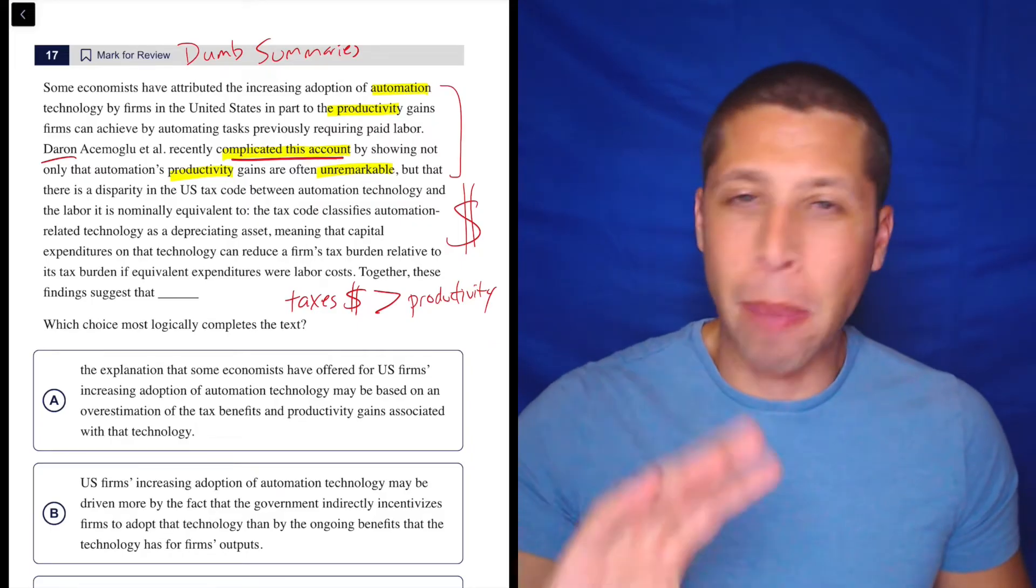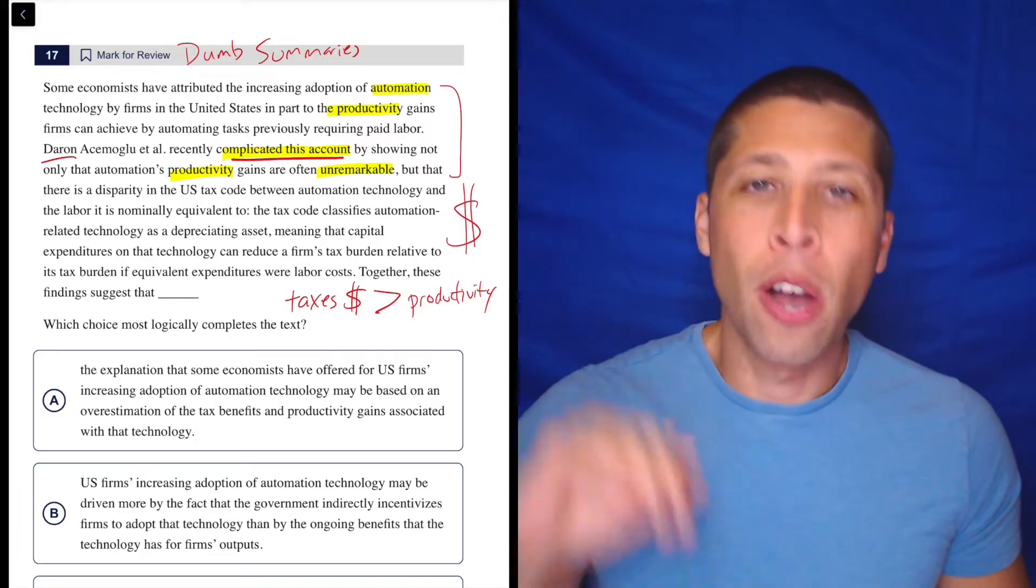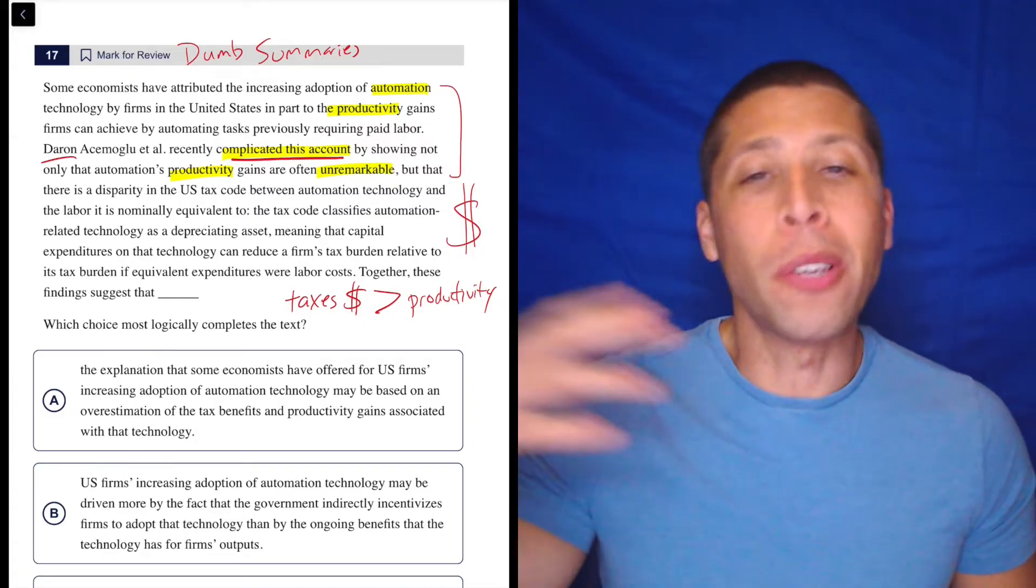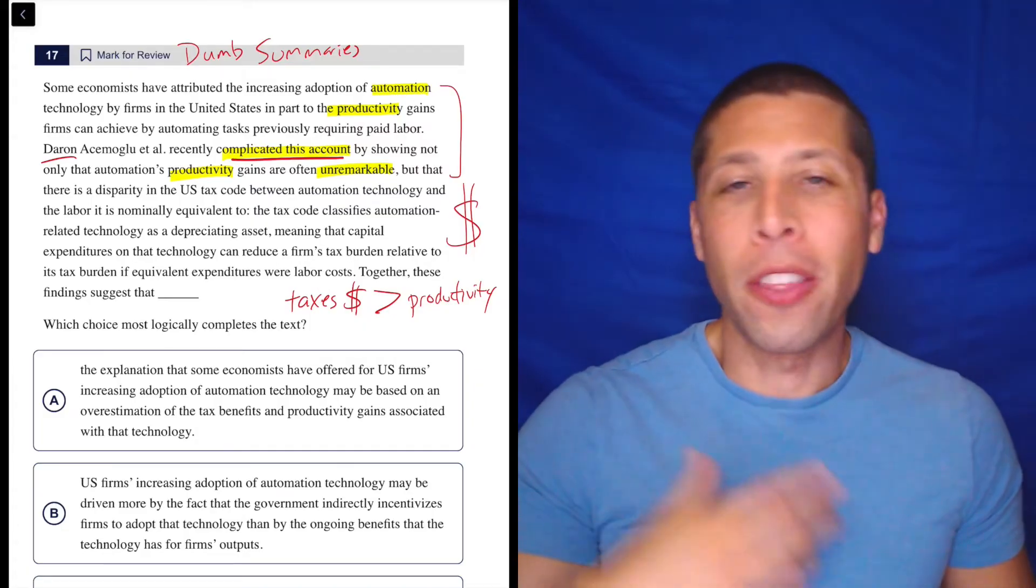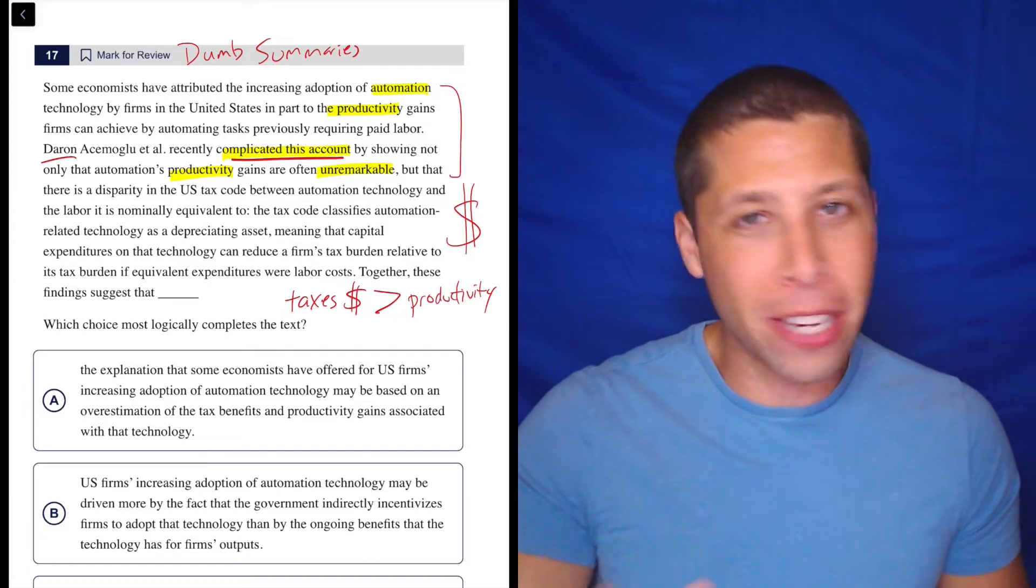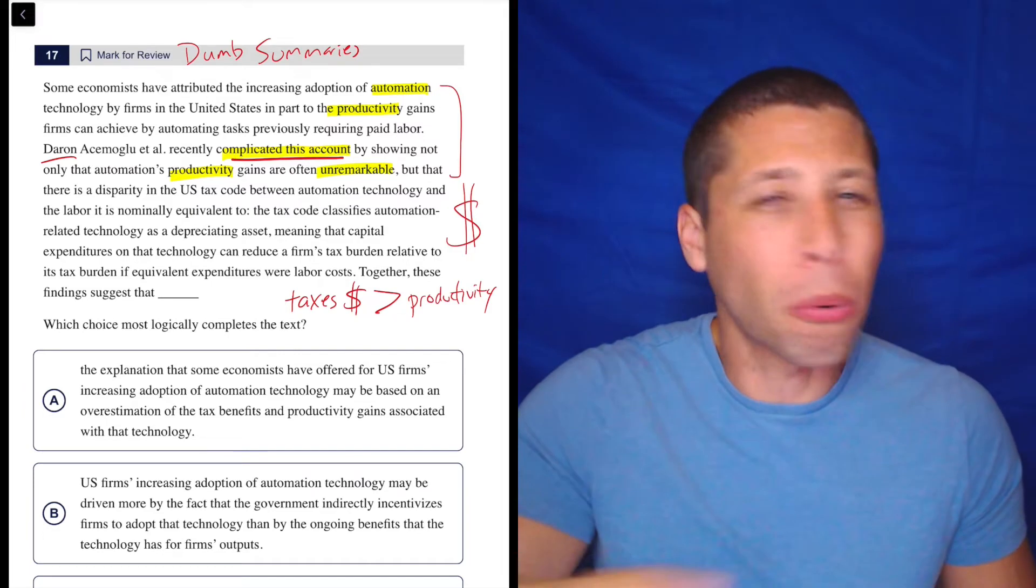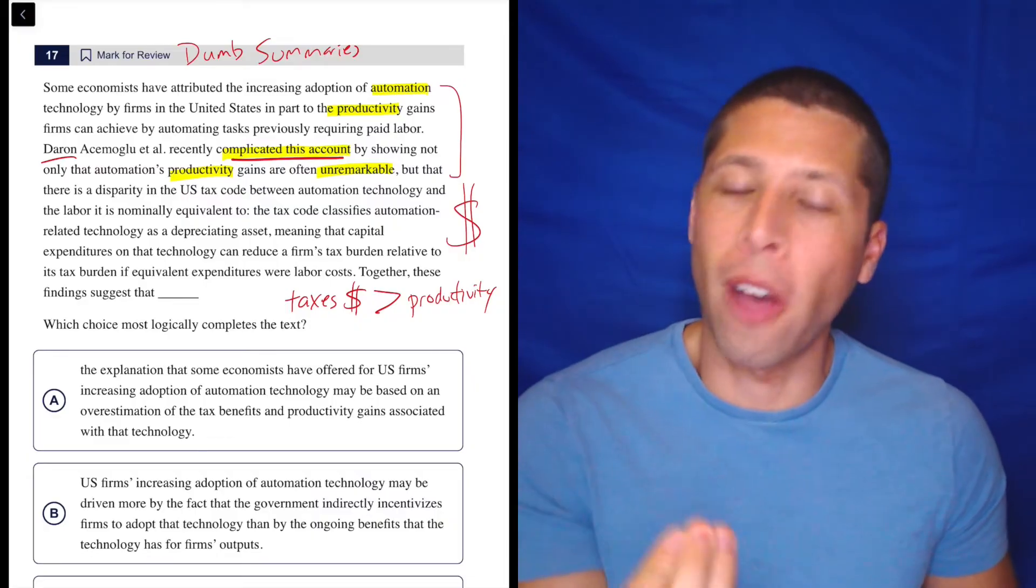So you've got to look out for phrases like this in these passages that basically say what we used to think is wrong, what we used to think isn't the whole truth, there's some other evidence. All of that is a common thing you're going to see on the SAT.